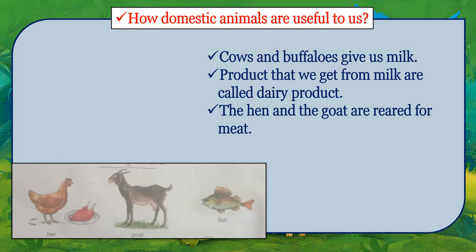The hen and the goat are reared for meat. We get meat from hen, goat, fish, etc. People that eat meat and fish are called non-vegetarians, and people that eat only fruits and vegetables are called vegetarians.